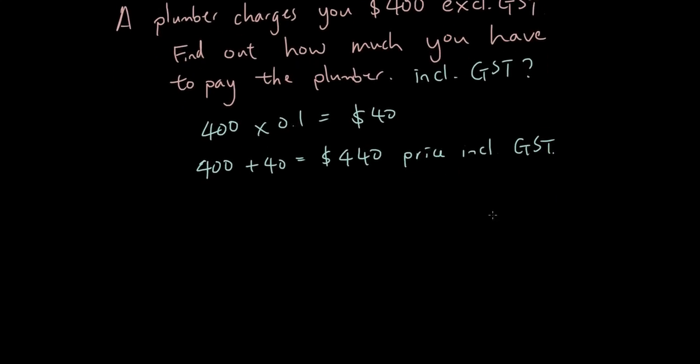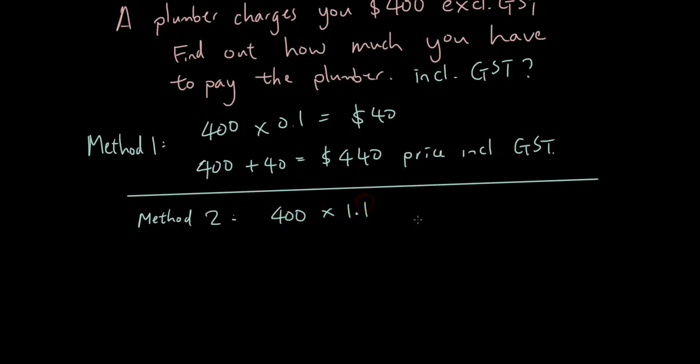Now here is a quicker way of doing that. Instead of going 400 times 0.1 equals 40, 400 plus 40, Method 2, a slightly quicker method. You can think of this one as method 1, a bit slower. The quicker way is just going 400 times 1.1 and then you'll get $440. So you can speed it up. Now why is it 1.1? Because when you multiply by 0.1 you get $40.